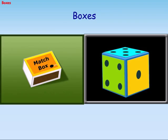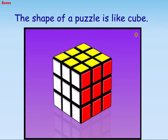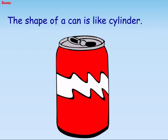Boxes. The shape of a diamond is like a pyramid. The shape of a puzzle is like a cube. The shape of an ice cream is like a cone. The shape of a cane is like a cylinder.